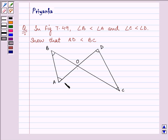Now this is figure 7.49 which we need to refer to for the above written question. It says that angle B is less than angle A and angle C is less than angle D. Now we need to show that AD is less than BC.